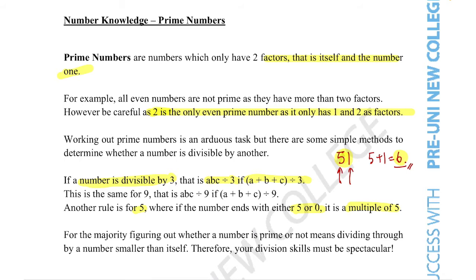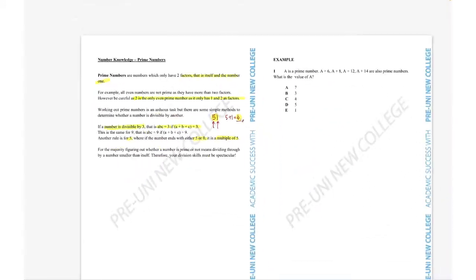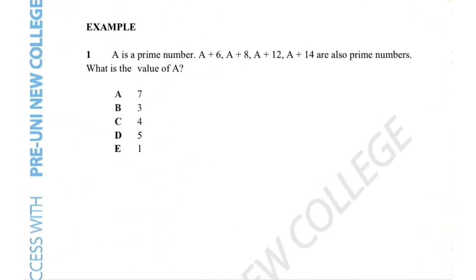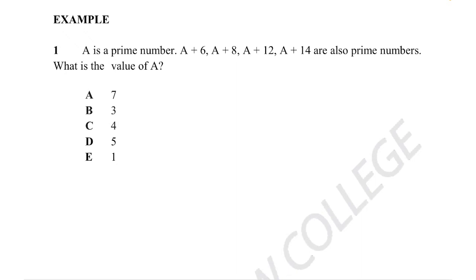For the majority of cases, figuring out whether a number is prime means dividing by a number smaller than itself. This means our division skills need to be very polished. That's a general overview. Now let's take a closer look at an example.